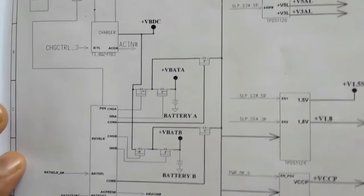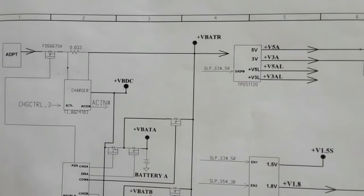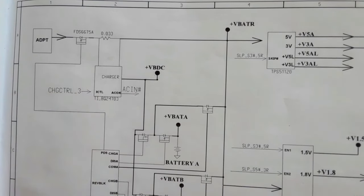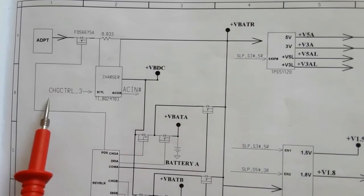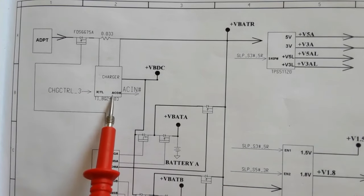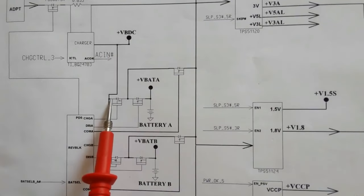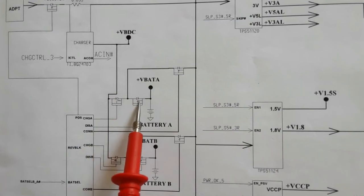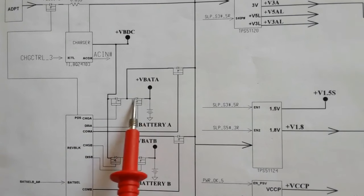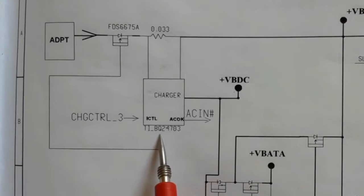The battery needs to be charged. The charge IC receives a charge control signal from the EC (embedded controller) or super IO. The charge IC then activates two MOSFETs, which allow current to flow and charge the battery.